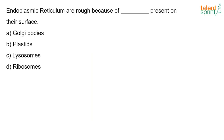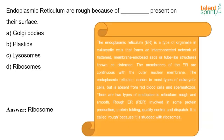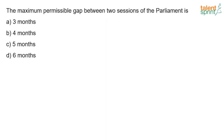The endoplasmic reticulum is rough because of ribosomes present on its surface. The endoplasmic reticulum is a type of organelle in eukaryotic cells that forms an interconnected network of flattened membrane-enclosed sacs or tube-like structures known as cisternae. Its membranes are continuous with the outer nuclear membrane. There are two types: rough and smooth. The rough endoplasmic reticulum is involved in protein production, protein folding, quality control, and dispatch, due to the attached ribosomes.